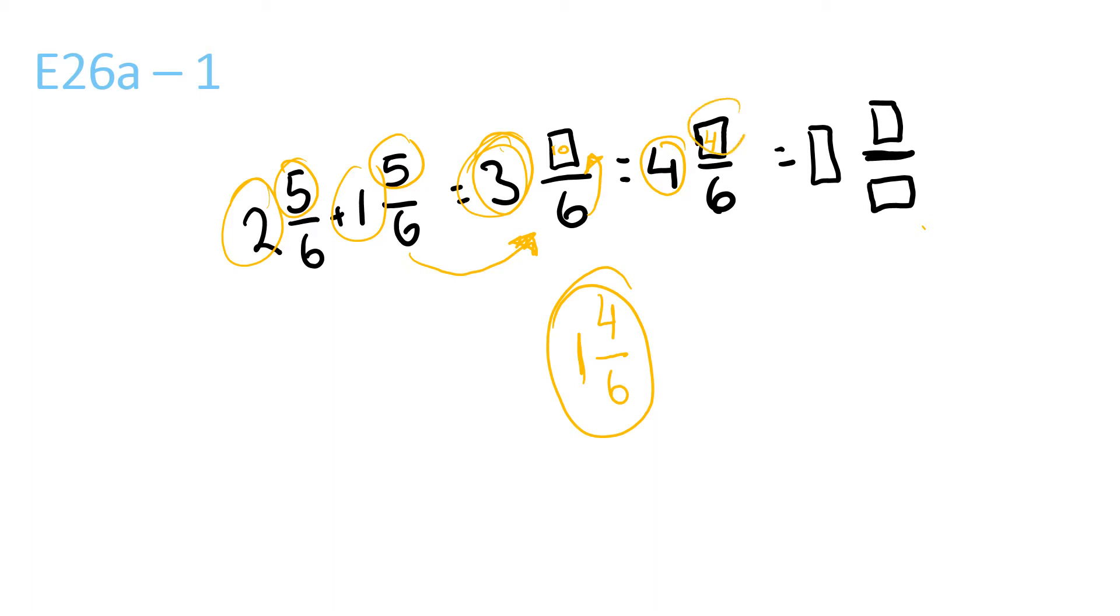Now you need to find a number that both the numerator and denominator are divisible by. That's 2. So you divide them by 2. The whole number stays 4. Divide the top by 2, that's 2, and divide the bottom by 2, that's 3. So the answer is 4 and 2 thirds.